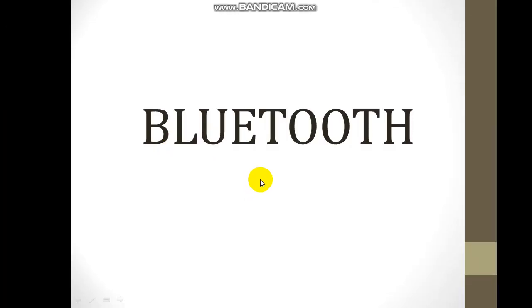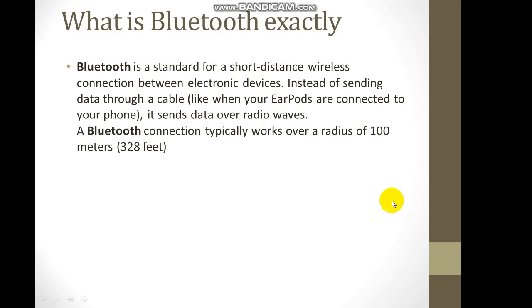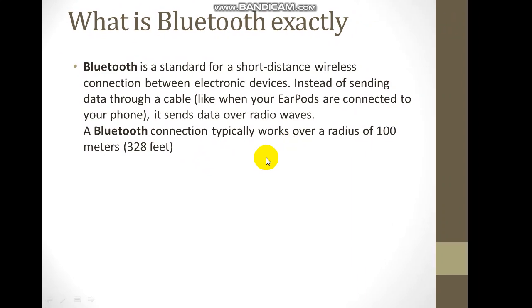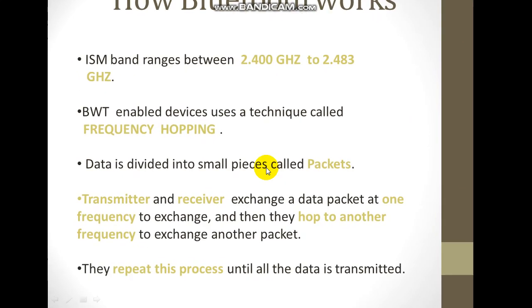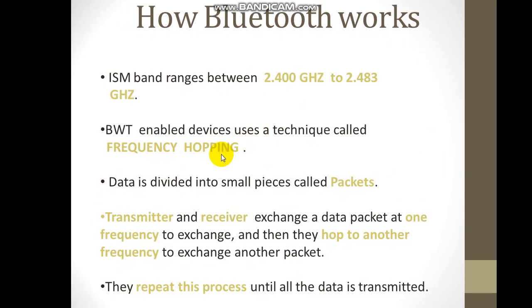Good morning. I'm going to start about Bluetooth, IEEE standard 802.15. Bluetooth is the standard for short distance wireless connection between electronic devices. The Bluetooth connection typically works over a radius of 100 meters, operating in a band range between 2.4 to 2.485 GHz.